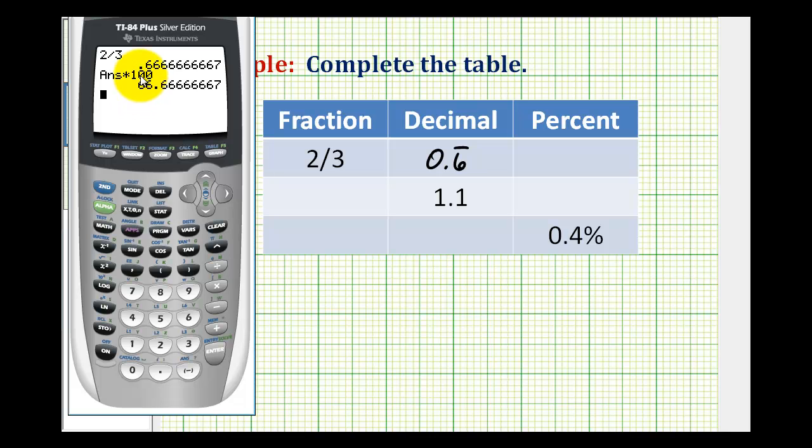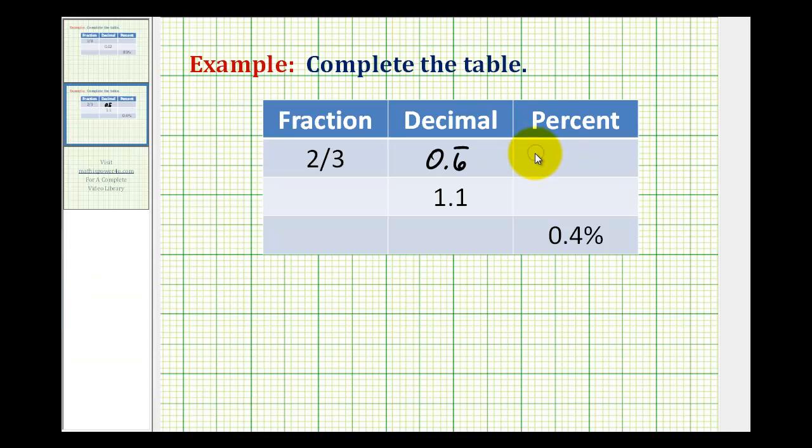Notice multiplying by 100 is the same as moving the decimal point two places to the right. So again we can write this two ways. We can write this as 66.6 percent with the six repeating or 66 and two-thirds percent.